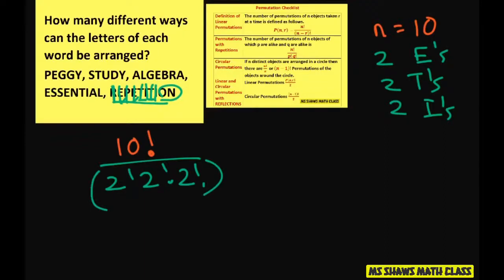So basically you can put that in the calculator. Or multiply it out like we did before. And for this one the answer will be 453,600.